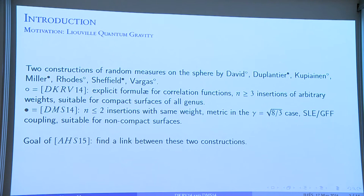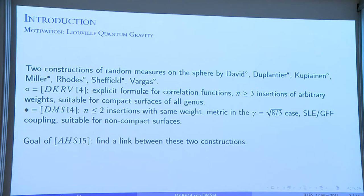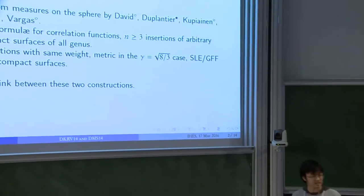So the goal of our work—this is a joint work with Johan Aru and Xin Sun—the goal of our work is to find a link between these two constructions. It was not clear in the beginning that, for example, on the sphere, they would give the same kind of limit.